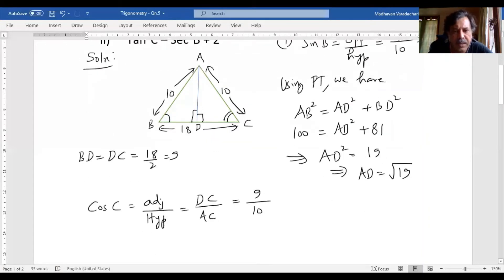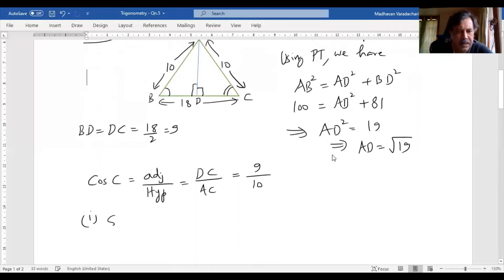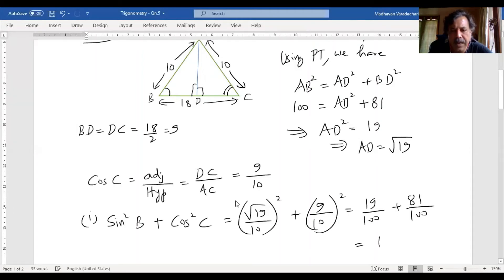So we can now find out what is our first question. Question number 1, it is sine square B plus cos square C. Sine square B which means root 19 by 10 the whole square. Cos square C means 9 by 10 the whole square. So the first term will become 19 by 100. Second term will become 81 by 100. So if we add it is 100 by 100, so that is equal to 1. So that is about our first part of the question.